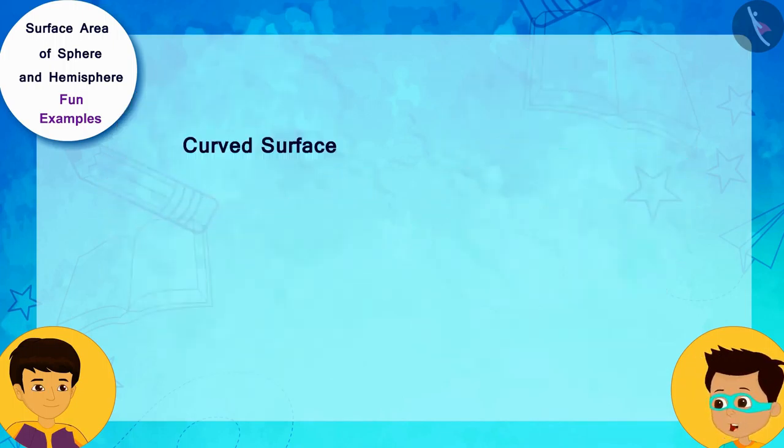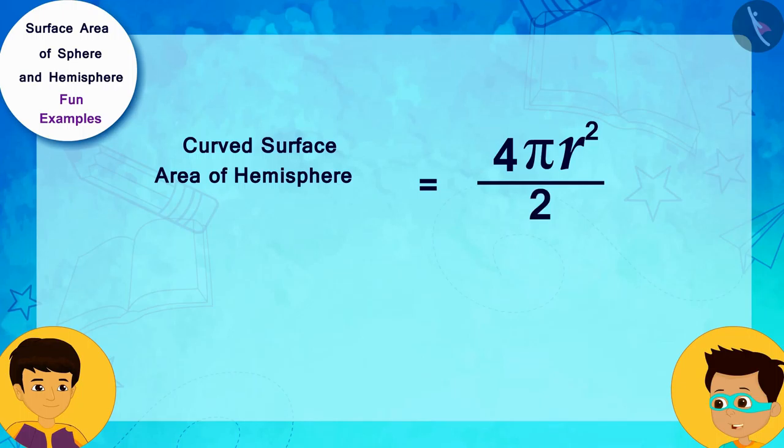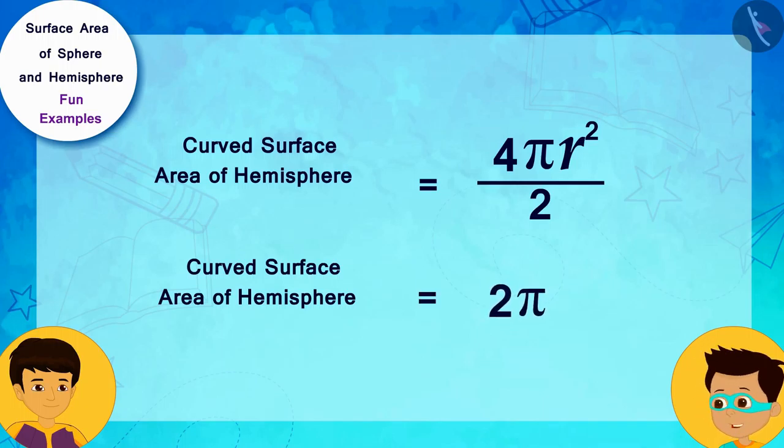Therefore, the curved surface area of the hemisphere will be equal to half of the surface area of a sphere. That is, 4πr² divided by 2. In this way, the curved surface area of the hemisphere is 2πr², where r is the radius of the hemisphere.